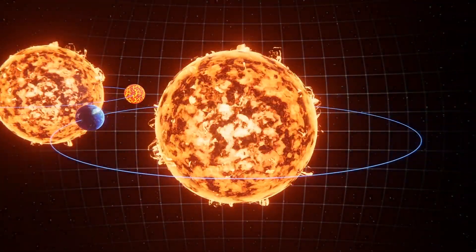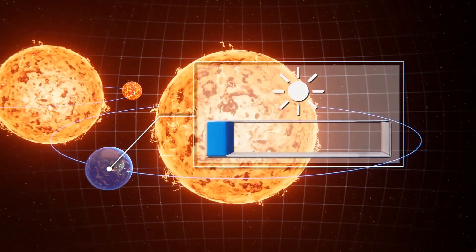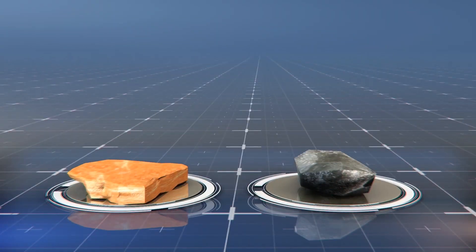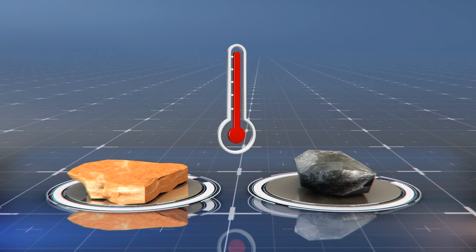In contrast, Earth reflects only about 10% of the sun's light.